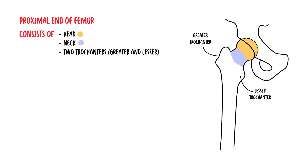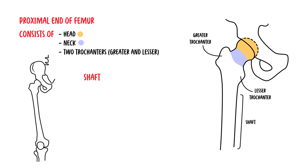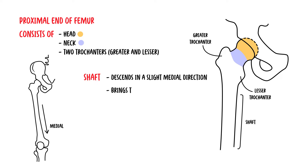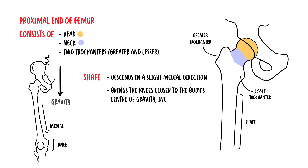The shaft of the femur descends in a slight medial direction, and this brings the knees closer to the body's centre of gravity, increasing stability.